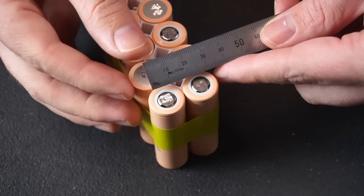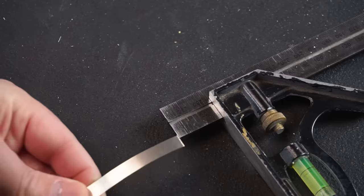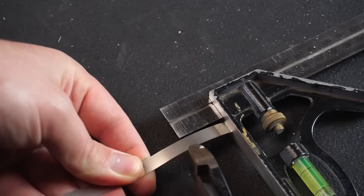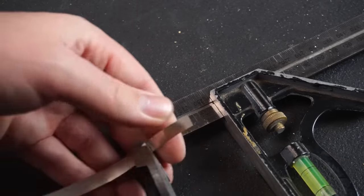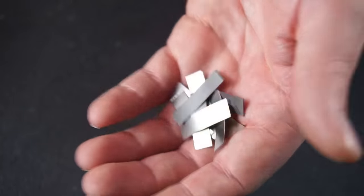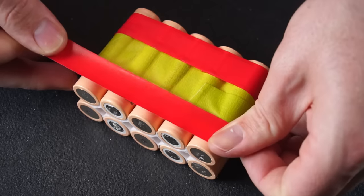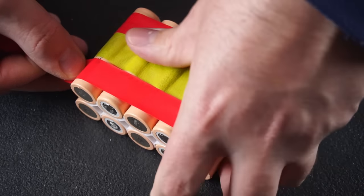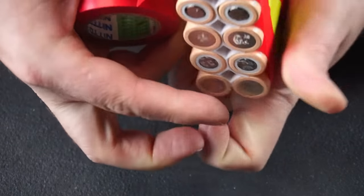I measured out how long I need to cut my strips to and then set a builder's square to the correct depth so I could cut a few strips to the correct length. I used some insulation tape to tightly hold the cells together.